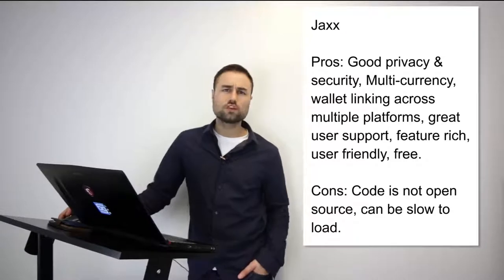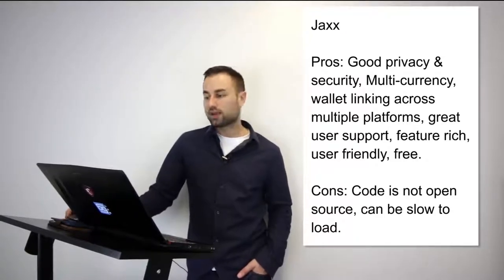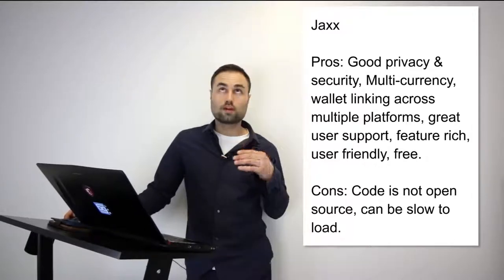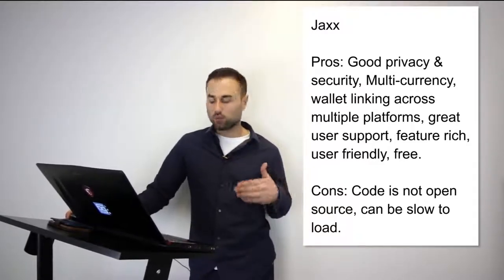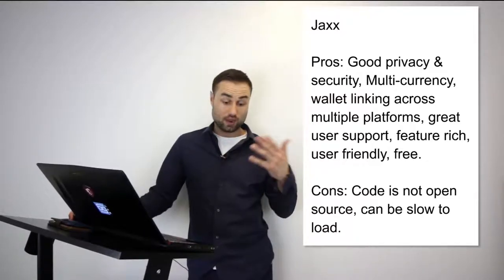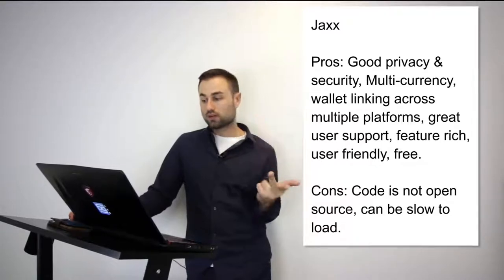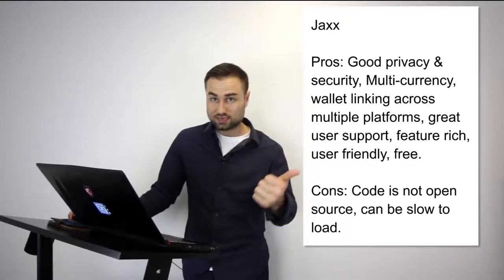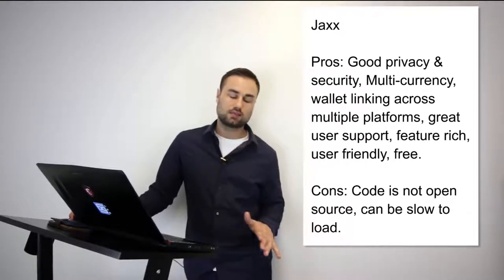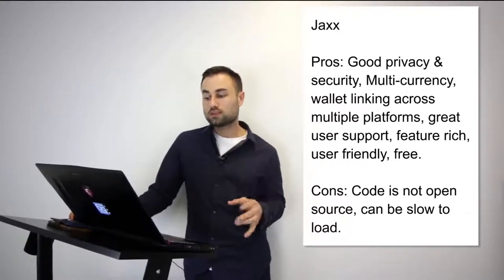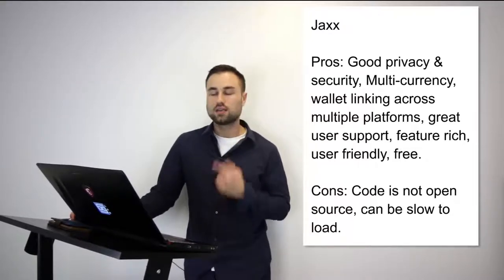Next is Jaxx — another mobile wallet. What's great about Jaxx is it supports multiple currencies such as Ether, Ether Classic, Dash, Litecoin, Bitcoin, and many more. Another great feature is the user interface — Jaxx has one of the best UX designs. When you log in you immediately know what's going on. Pros: good privacy and security, multi-currency support, wallet linking across multiple platforms so you can have it on desktop, iPad, and they sync with each other. User friendly. The cons: it's open source and can be really slow. Jaxx is my go-to multi-currency wallet on my phone for day-to-day transactions and paying people around the world.